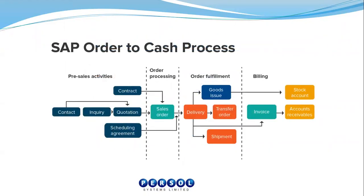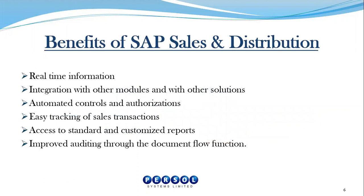During the order-to-cash process, some of the documents that can be created include the following. At the pre-sales phase, we can create the sales contract, inquiry, quotation, and scheduling agreements. At the order processing phase, we can create the sales order. At the order fulfillment or shipping and transportation phase, we create the delivery documents along with other documents such as transfer orders, picking requests, and then subsequently do a goods issue. And then at the billing stage, we create our sales invoice, based on which the customer pays. These are just a few documents that can be created at each stage of the order-to-cash process.